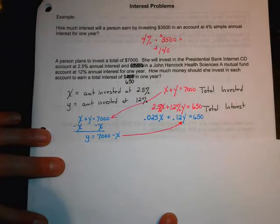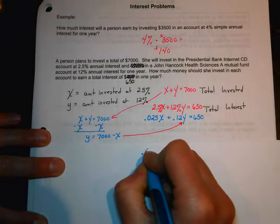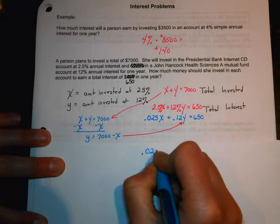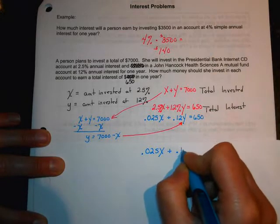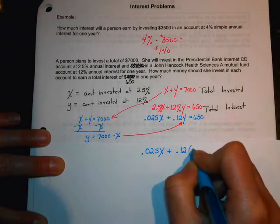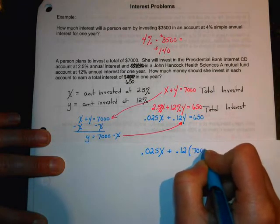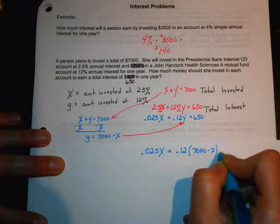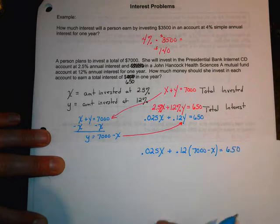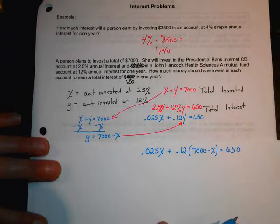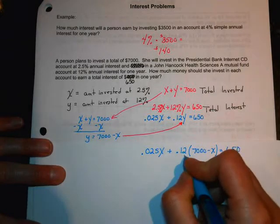This way we'll have a little sneak some room in there. So, we've got 0.025X plus 0.12. And instead of Y, we're going to write that 7,000 minus X because we're using the substitution method. And that equals 650.